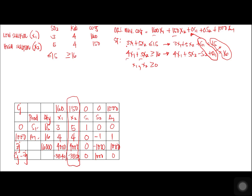Next, compute the pivot ratios. The pivot ratio is the quantity divided by the values in the optimum column. We have 15 ÷ 5 = 3, and 16 ÷ 4 = 4. We choose the smallest quotient, which is 3. So the S1 row is the outgoing row, and X2 is the incoming variable.